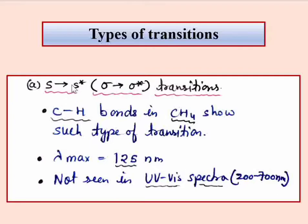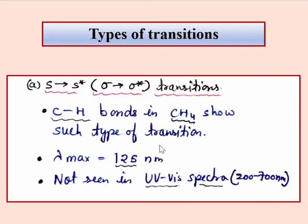The first transition type is sigma to sigma star (S to S*). Sigma electrons are found in compounds like CH₄, which contains sigma bonds. The electron transitions from the sigma bonding molecular orbital to the sigma anti-bonding molecular orbital. For example, CH₄ has a lambda max of about 125 nanometers, which is so high in energy that it cannot be absorbed in the UV-visible range of 200 to 700 nanometers.